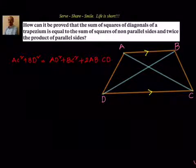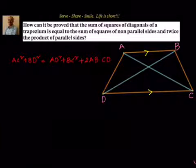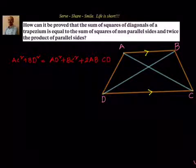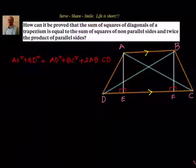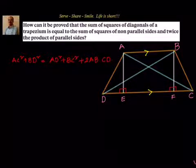Now we have to prove that. For that, we want to leverage the Pythagoras theorem. So from A and B, I will drop two perpendiculars so that we will have AE and BF, which are nothing but equal to the height of the trapezium. We have dropped perpendiculars AE and BF. Now we know that AB = EF because ABEF is a rectangle, and we see a lot of Pythagoras theorem here.